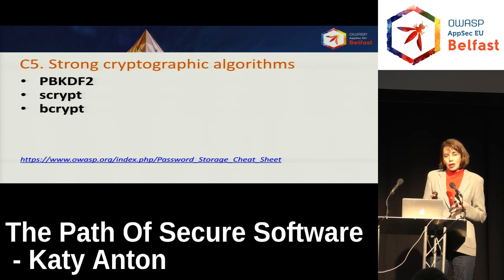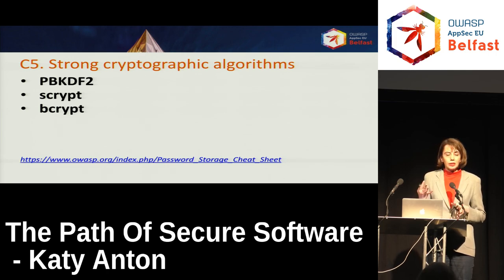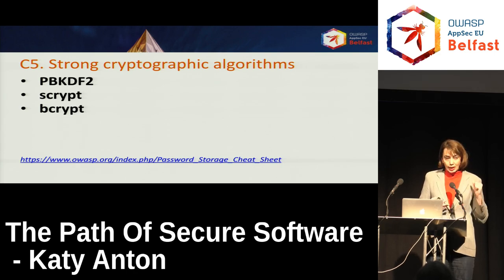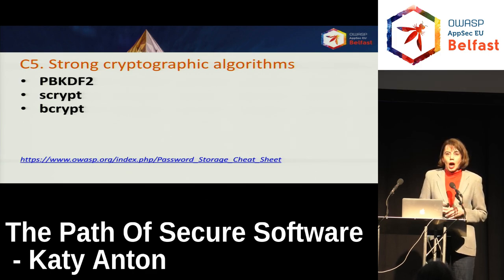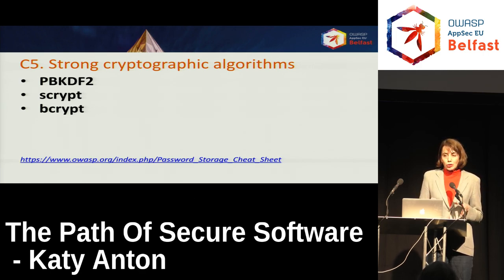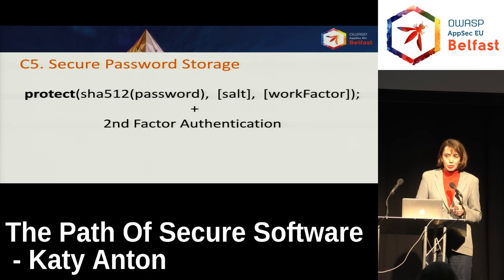One thing to be aware of is the maximum length of the password. If the password is too long, there is a risk of denial of service. Also, certain algorithms like bcrypt automatically truncate anything over 72 bytes. Ideally you would use a modern hash like SHA-512 first, because this prevents denial of service and solves the problem of truncation. To recap for secure password storage: use a modern hash to protect against denial of service or truncation.